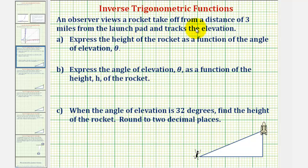An observer views a rocket takeoff from a distance of three miles from the launch pad and tracks the elevation. Notice we have three parts here. For part A, we want to express the height of the rocket as a function of the angle of elevation theta. To do this, let's use the model given below to label the given information.